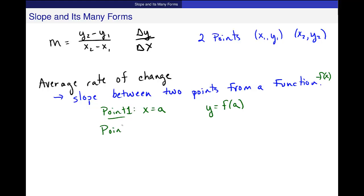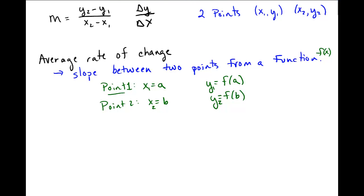Point 2, the second point, usually we call x is b and y equals f of b. So if you want to call these (x1, y1) and (x2, y2), that's fine with me too. So we have this specific notation when we're working with functions.